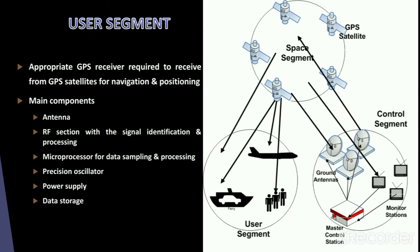The user segment requires appropriate GPS receivers to receive signals from GPS satellites for navigation or positioning. The major components of GPS receivers include the antenna, the RF section with signal identification and processing, a microprocessor for data sampling and processing, a precision oscillator, a power supply, and memory or data storage.